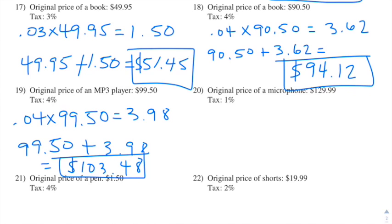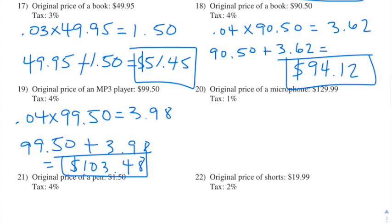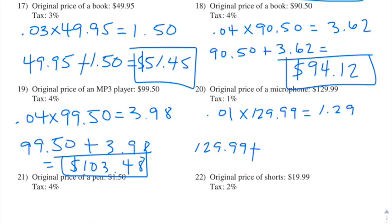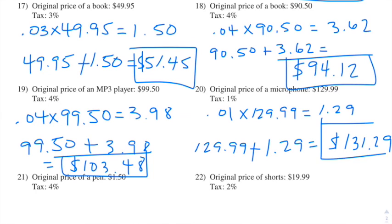Number twenty: the original price of a microphone is $129.99 and the tax is 1%. We take 1% of $129.99 and get $1.29. So we do $129.99 plus $1.29 and we end up getting $131.28 — wait, $131.29 — and that's our final answer.